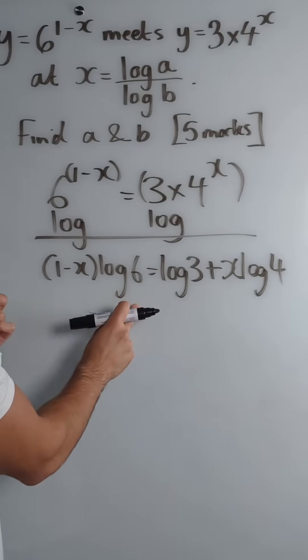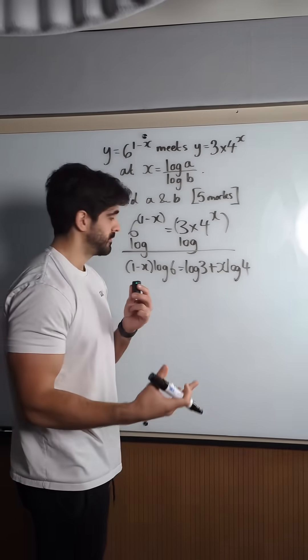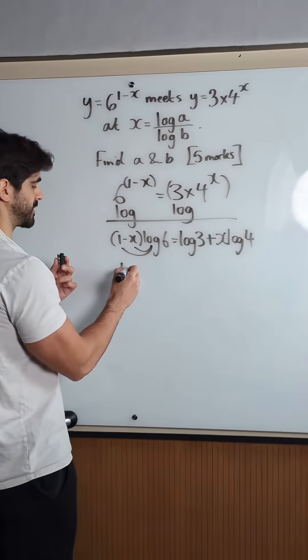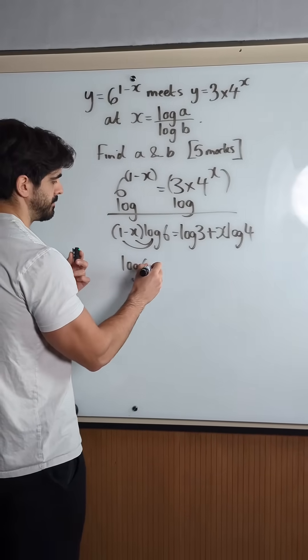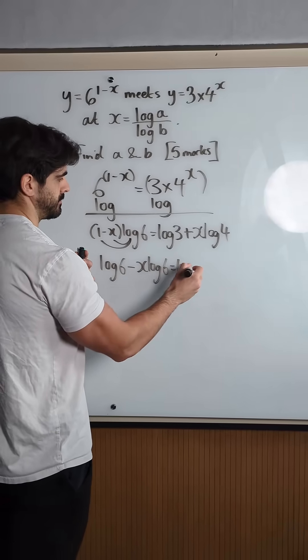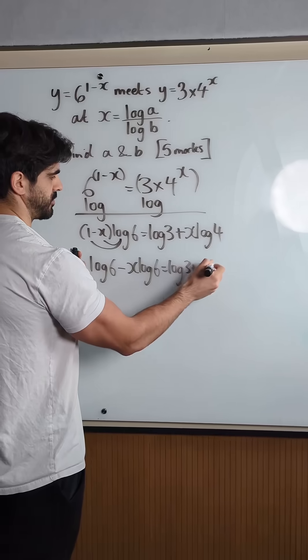Okay, log 6 is a number so now we're going to expand the brackets. So you've got 1 times log 6 is log 6, minus x log 6 is log 3 plus x log 4.